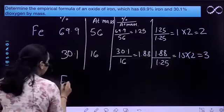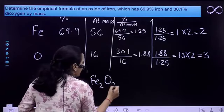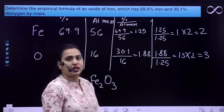The empirical formula of the compound is Fe2 and O3. It is Fe2 and O3. Thank you.